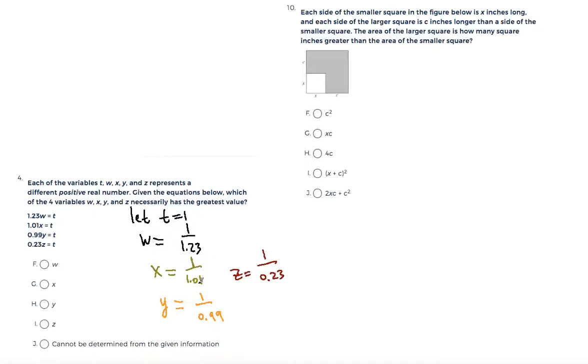That's the trick that you have to realize. You do not have to waste time finding out the number in your calculator. Just notice which denominator gives you the smallest number. Obviously the z, it's the smallest denominator out of all these four, so it will give you the largest number.